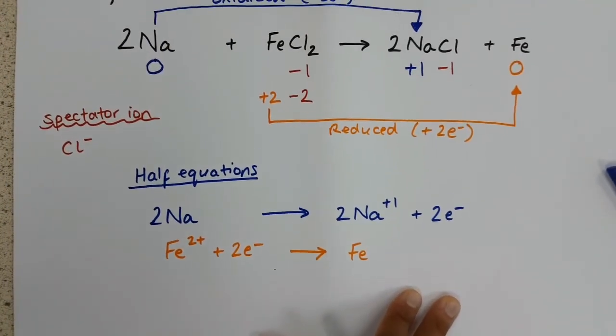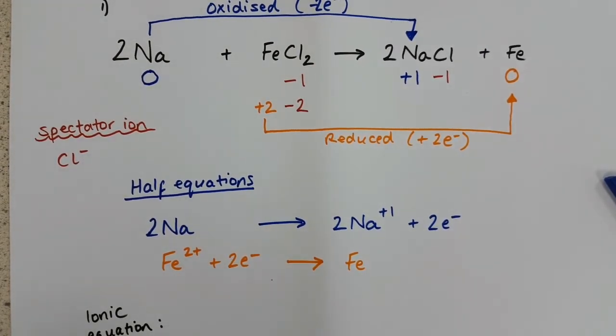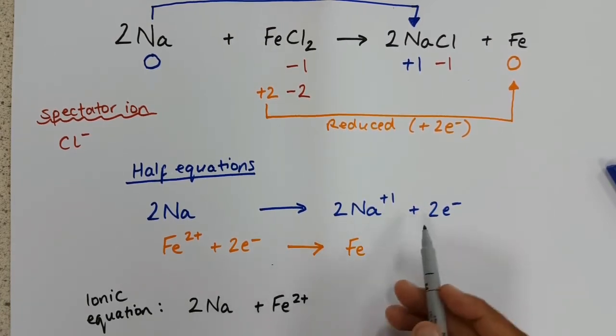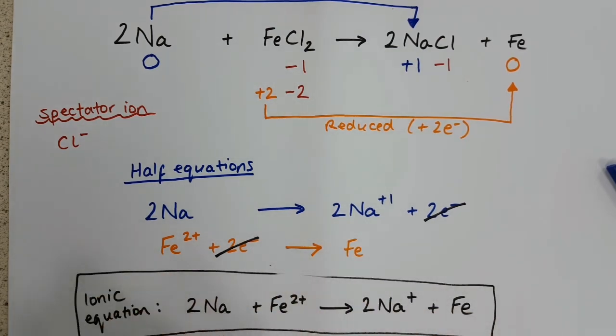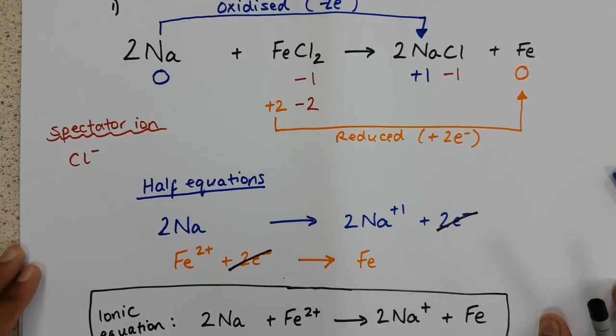The final step is to combine our half equations to form what we call our ionic equation. And this step is actually quite nice. We literally just combine the two half equations together. We start with 2Na. We also have Fe2+. The two electrons on the left and the right cancel out, so we don't include those in our ionic equation. And on the right-hand side, we have 2Na+, and we have Fe. And that is our overall ionic equation. Start to finish, this will probably be worth between 3 to 5 marks in your actual exam.